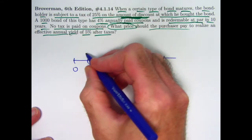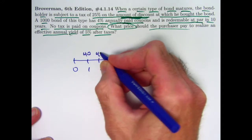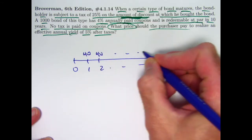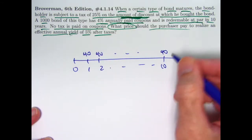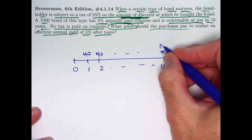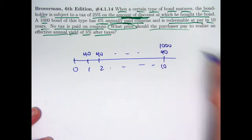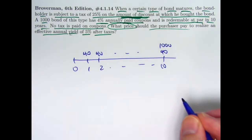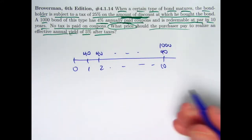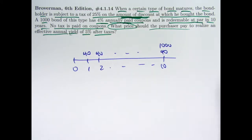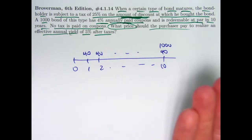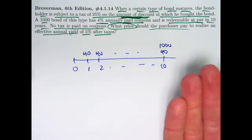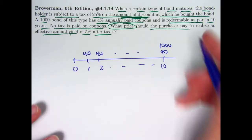The coupon amount is 4% of $1,000, which is $40. So you have 10 coupons of $40 each. You have the redemption amount at time 10, which is $1,000, redeemable at par. Then you have the taxes, which you can think of as a negative quantity. The price at time 0 is the present value of all these things, including the taxes as a negative quantity.